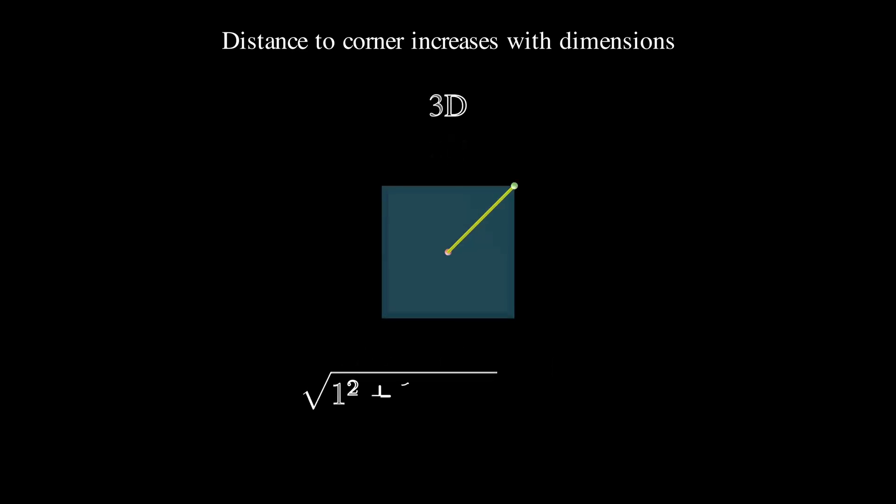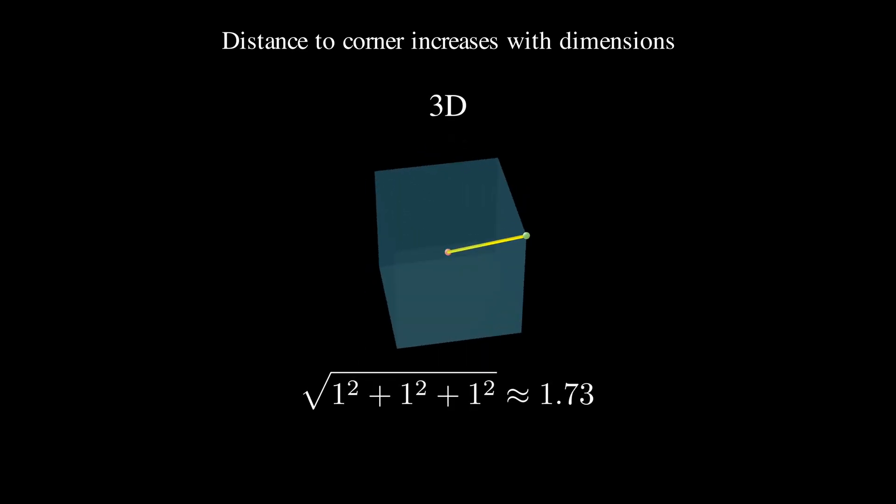Now let's move to a cube. The distance from the center to any corner becomes the square root of 1 squared plus 1 squared plus 1 squared, which equals the square root of 3, approximately 1.73.